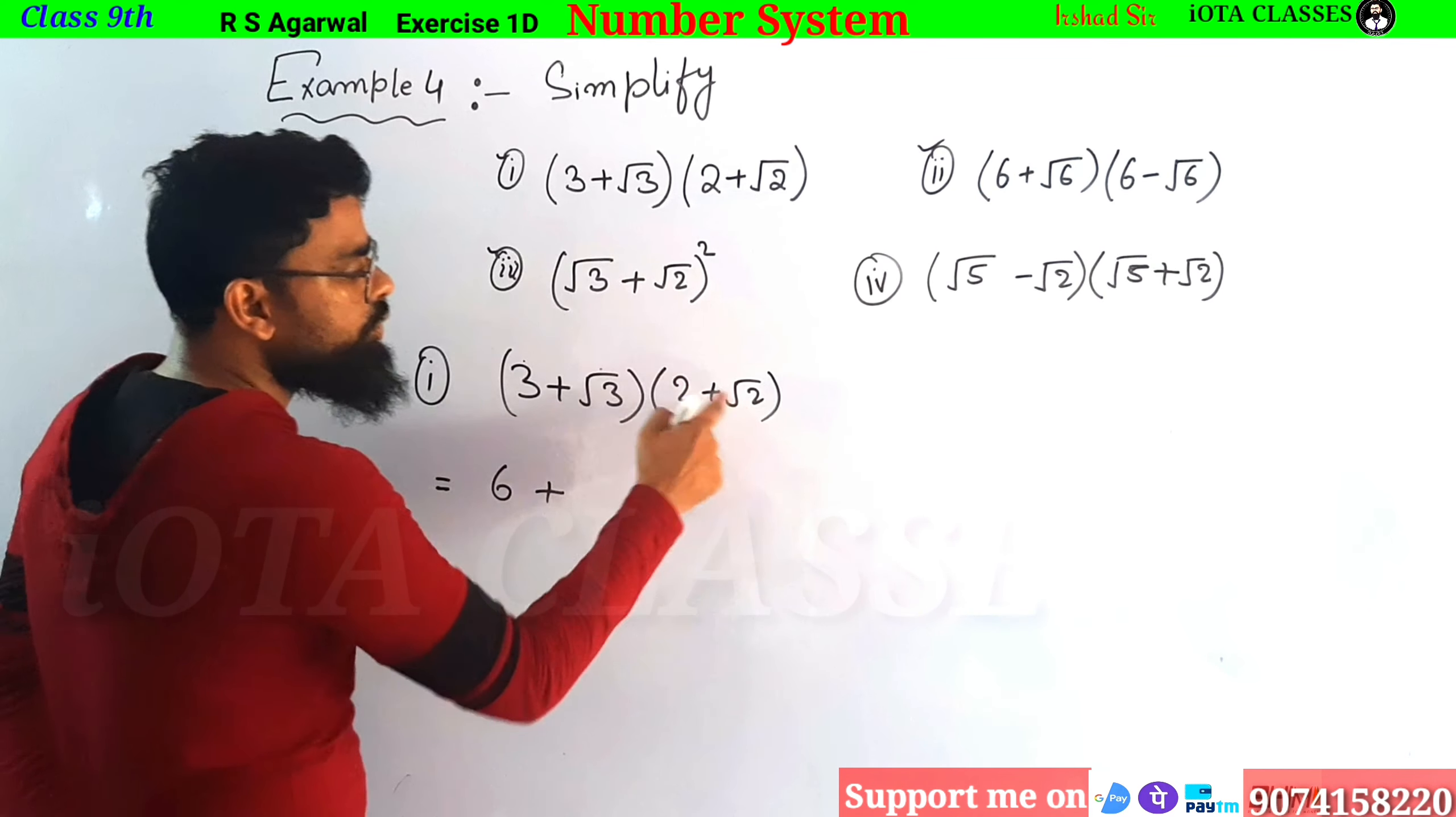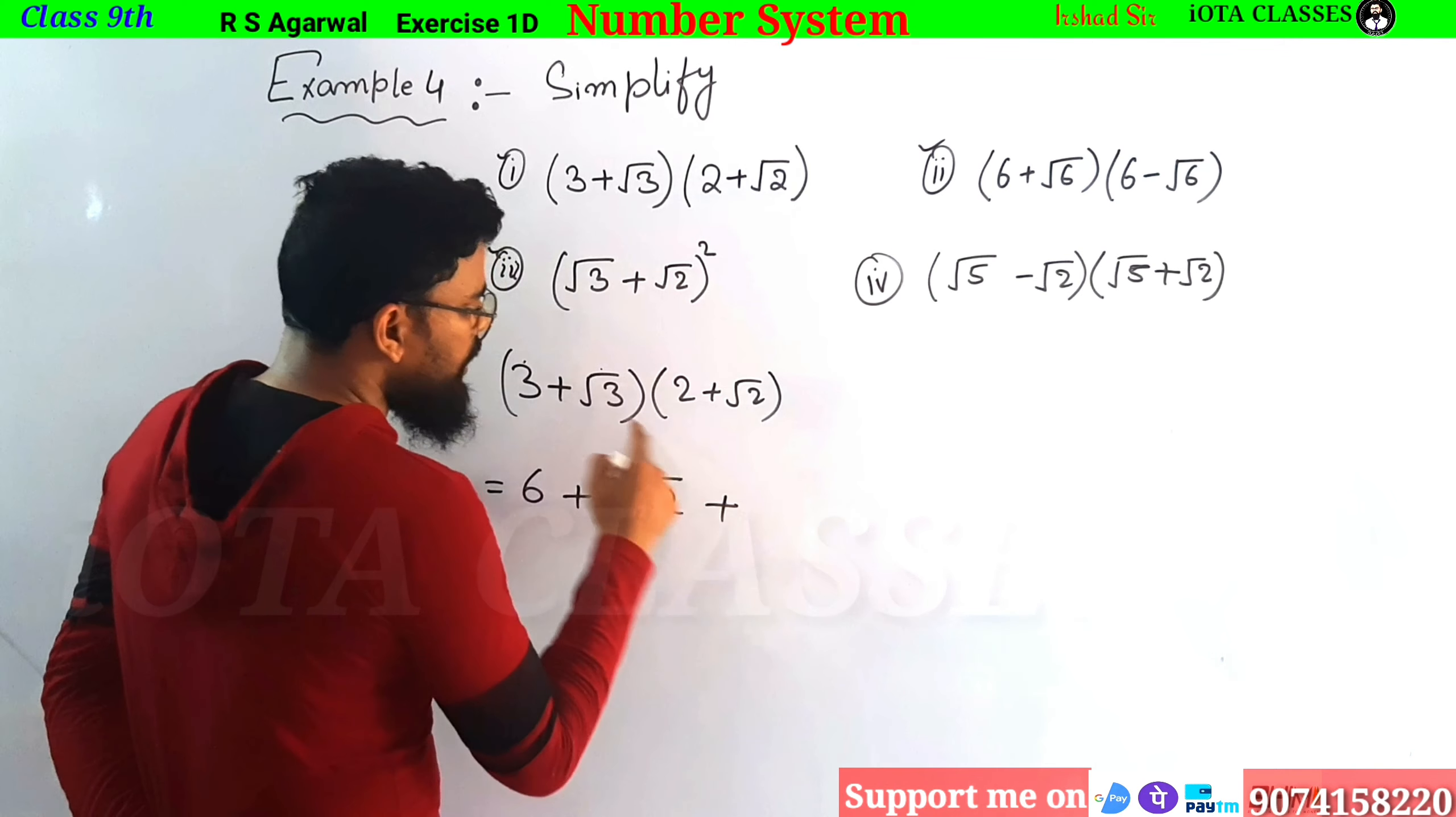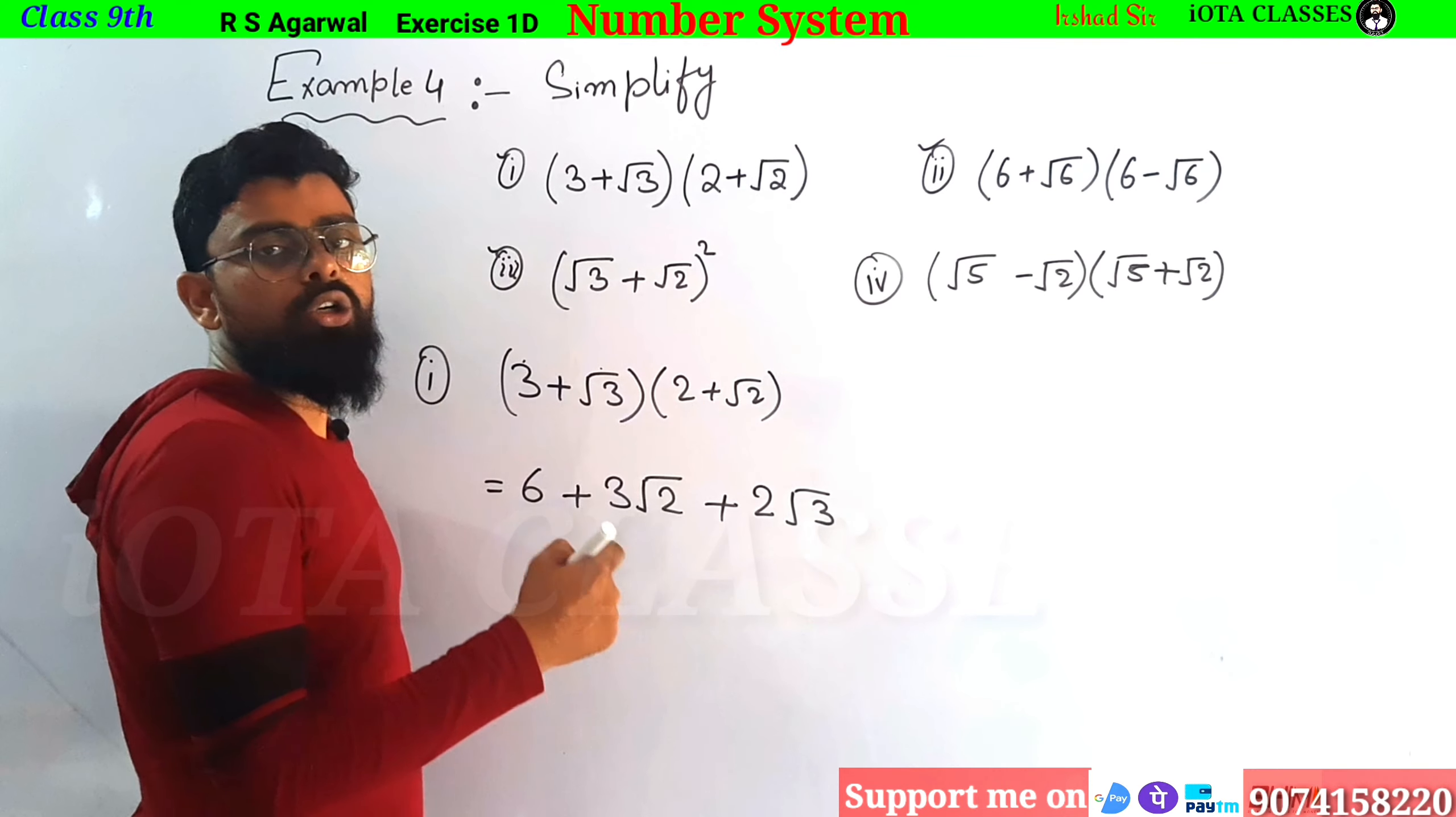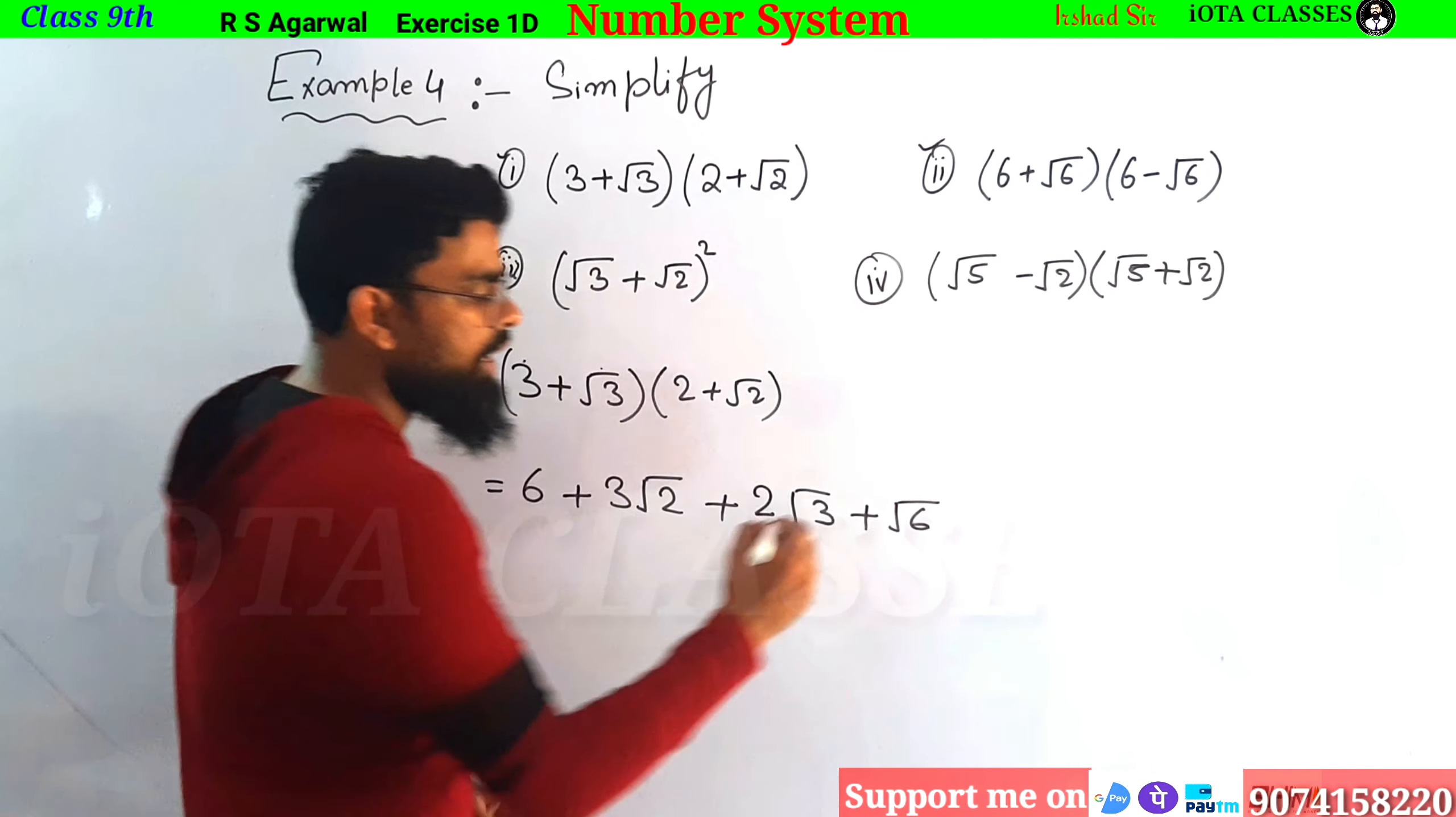So 3 into 2 is 6. 3 into root 2 is 3 root 2. Then we will multiply this root 3 into 2. The root 3 will be 2 root 3. Now we will multiply this root 3 into root 2. So root 3 into root 2 is root 6. We will write root 6. Now this is the answer.